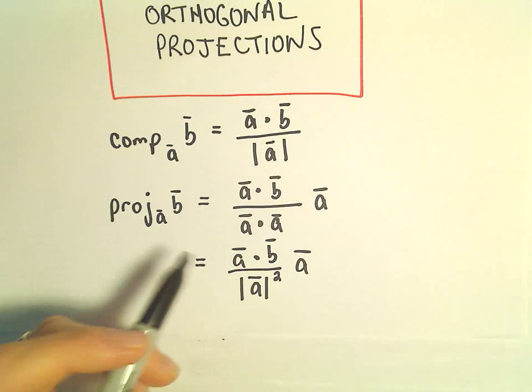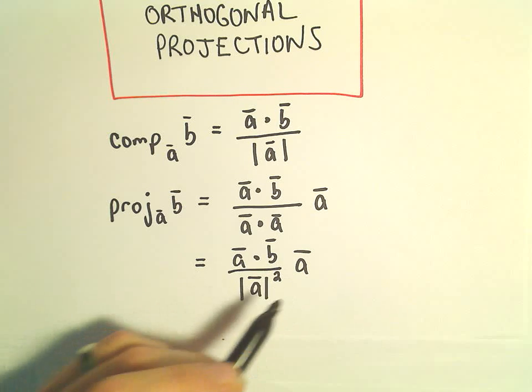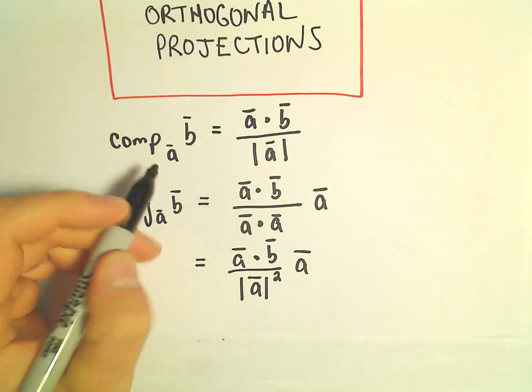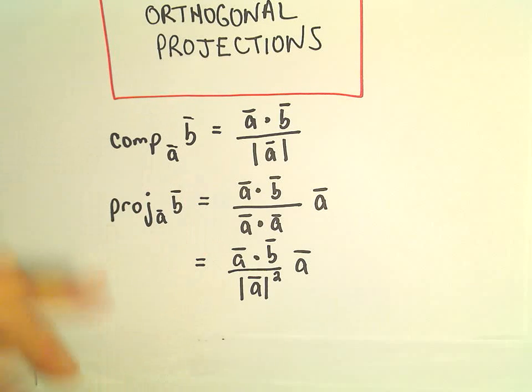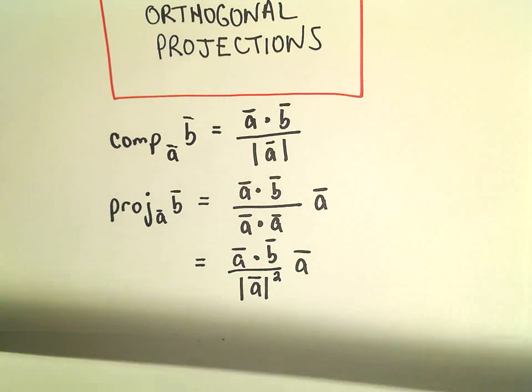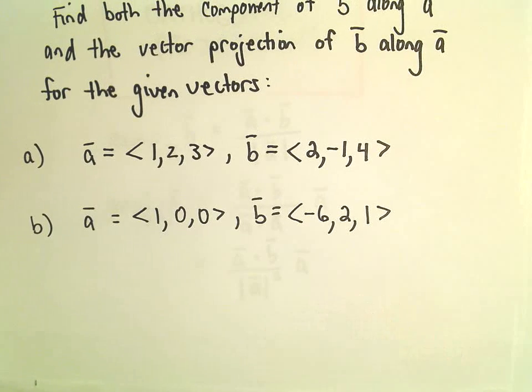Equivalently, we can write that as A dot B over the magnitude of A squared, times vector A. So, if I leave off any of the little lines, those indicate vectors. Everything I'm talking about here is vectors, so hopefully I won't accidentally do that.